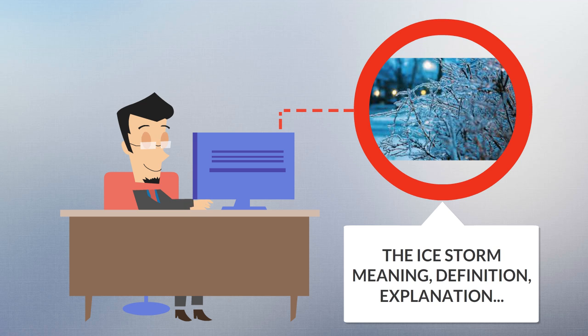The U.S. National Weather Service defines an ice storm as a storm which results in the accumulation of at least 0.25 inch (6.4 millimeters) of ice on exposed surfaces. From 1982 to 1994, ice storms were more common than blizzards in the U.S., averaging 16 per year.